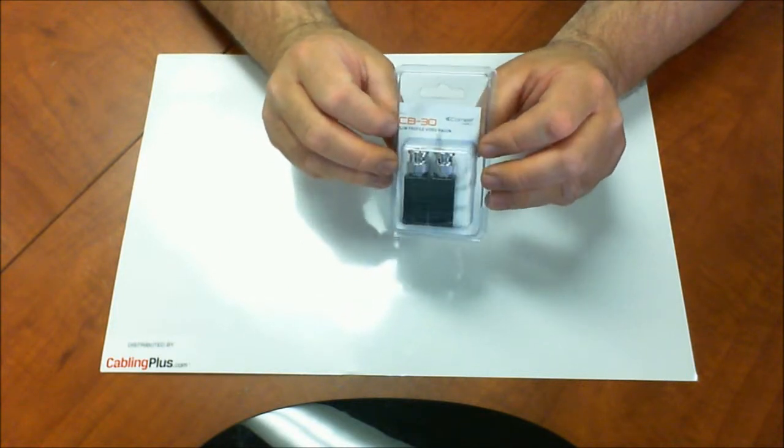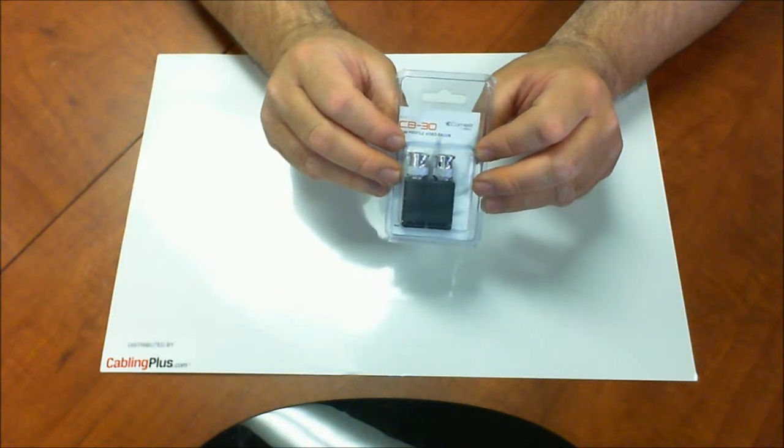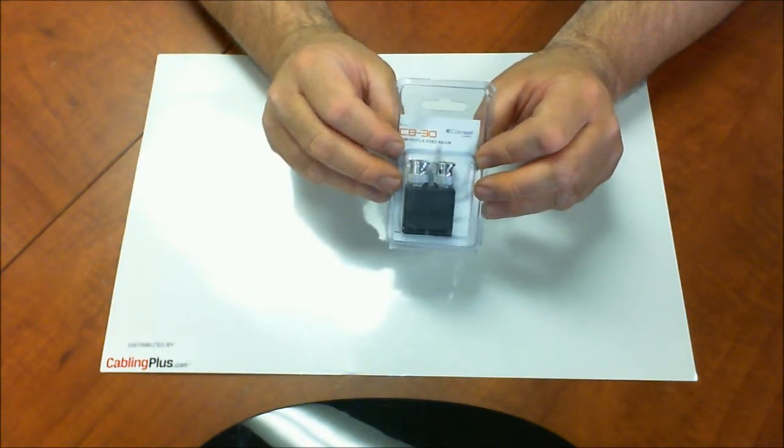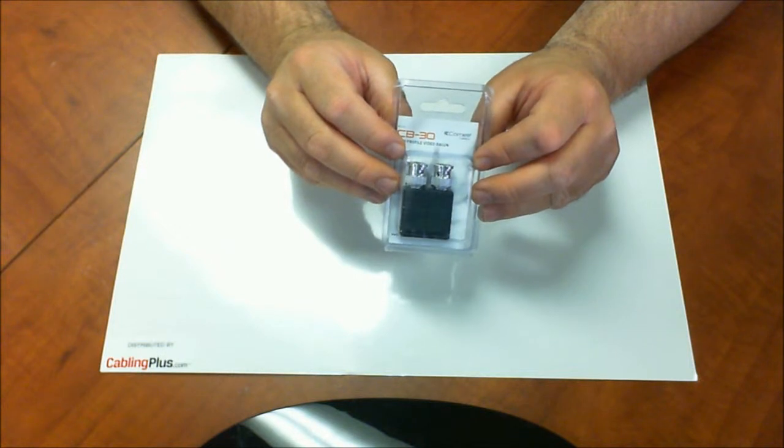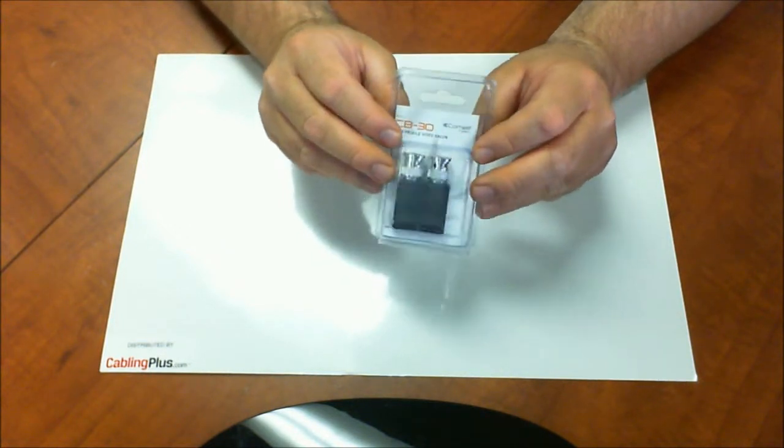Now these will offer 1800 feet of video in black and white and they'll also send video 1200 feet in color. They're 100% passive, so there's no power required, and you can even run up to four cameras per Cat5, so it's a little unique.